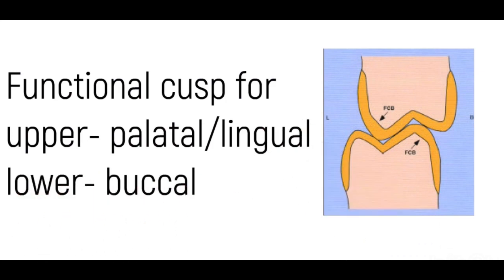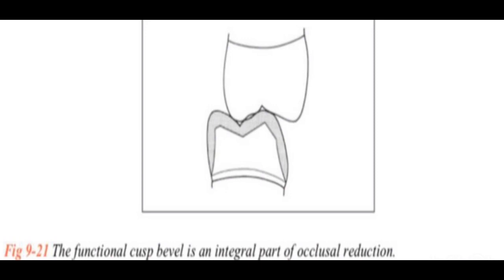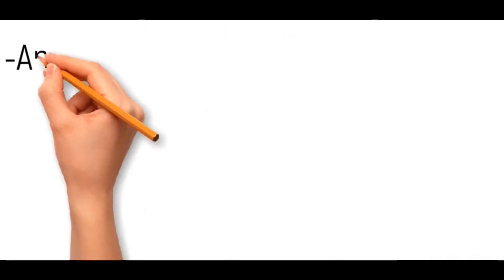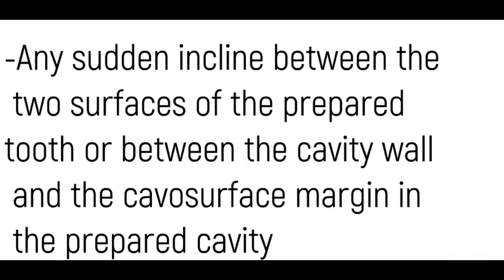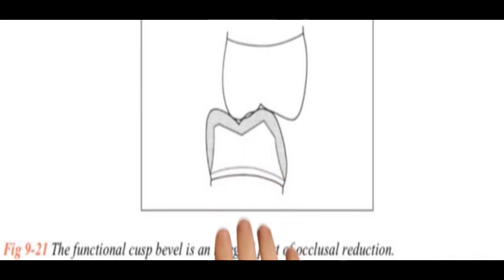In this figure can you see a sharp sudden incline on the buccal side? That's what a functional cusp bevel looks like, and why on the buccal side? Because the functional cusp for the lower arch is the buccal cusp. By now you must know how to define a bevel - any sudden incline between the two surfaces of a prepared teeth or between the cavity wall and cavity surface margin.